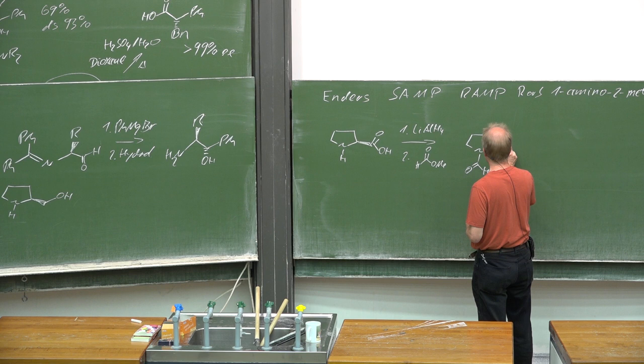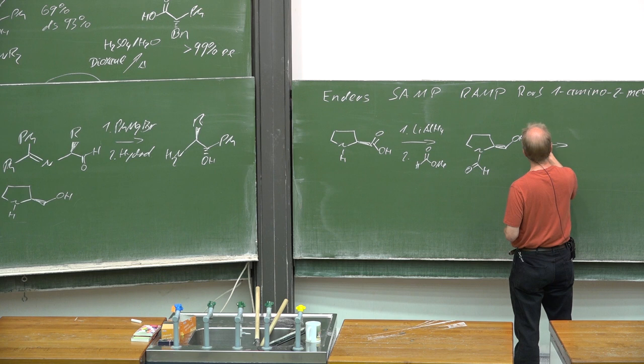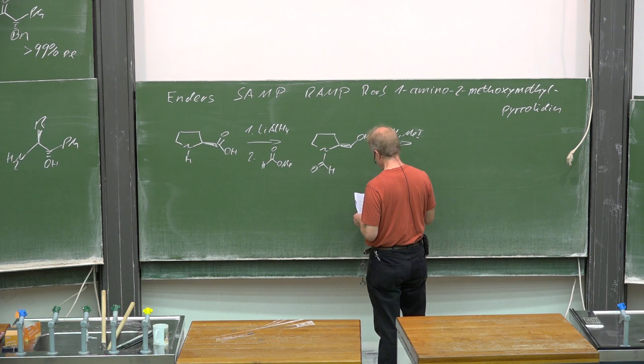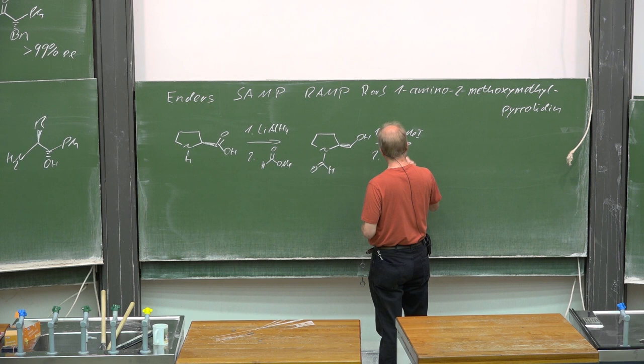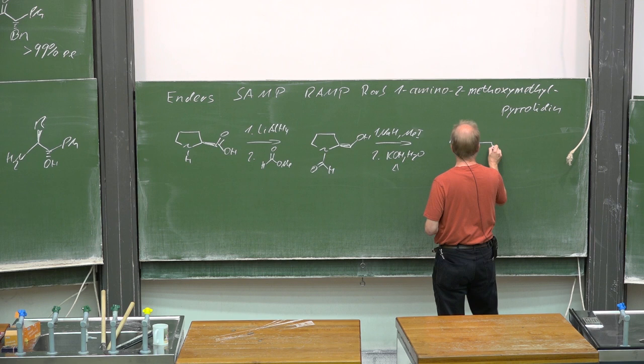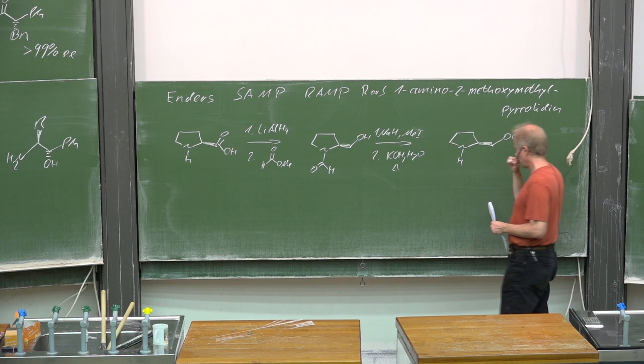Then with sodium hydride and methyl iodide, you can selectively O-alkylate. Afterwards, hydrolysis with KOH will give this ether.